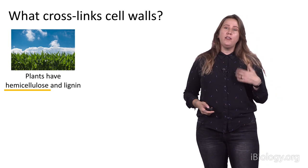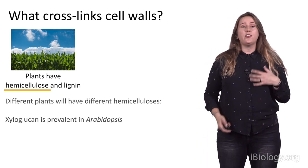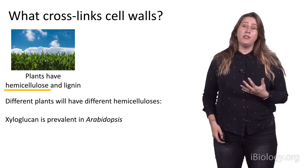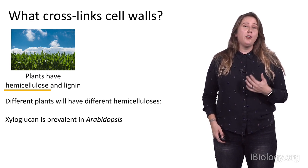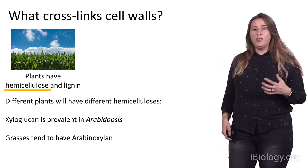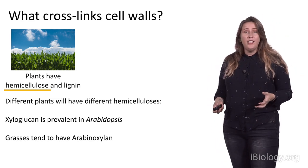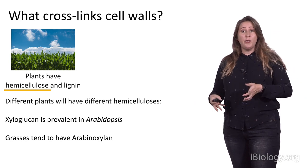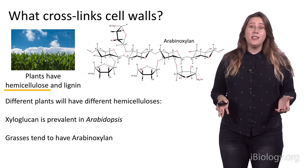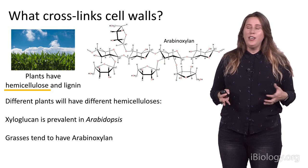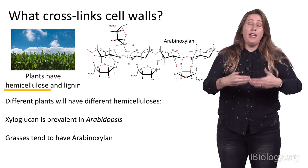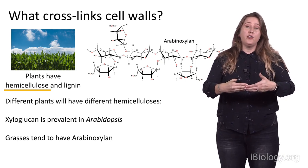So, the example that I've just talked about, xyloglucan, is actually incredibly present in Arabidopsis, which is one of the plants that we work with. But, for example, grasses have different types of hemicelluloses. And so, in grasses, you have something called arabinoxylan. And if you break it down into its parts, it's arabinose plus xylose put together. And this is what it looks like. So, it's a little bit more complex than xyloglucan. But, again, you still have some nice linear regions that might be able to actually fit in well with this crystalline cellulose structure.